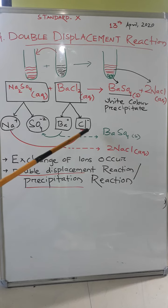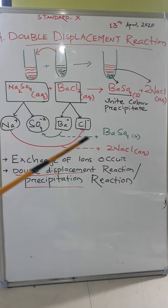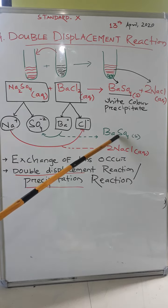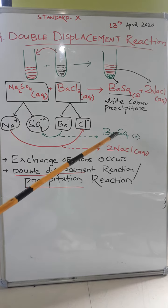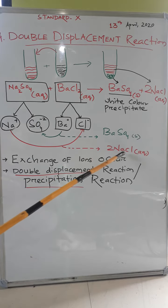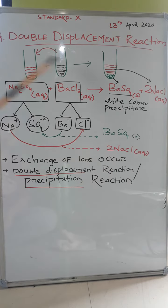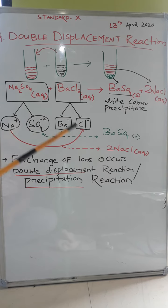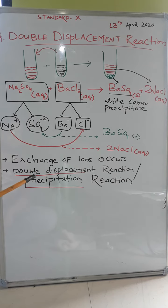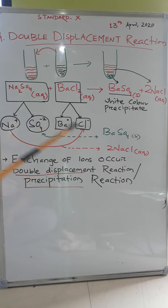Then what takes place: Ba²⁺ will displace the sulfate ion and Na⁺ will displace the Cl⁻ (chloride ion). As a result, BaSO4 is produced as a precipitate and NaCl remains in aqueous solution. In this type of reaction, the exchange of ions occurs — ions are exchanged between the two compounds.